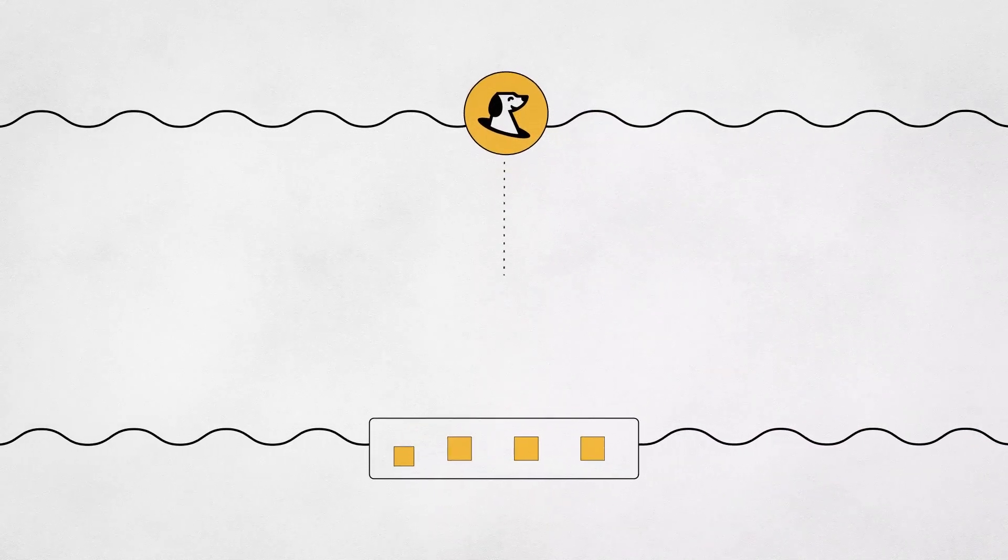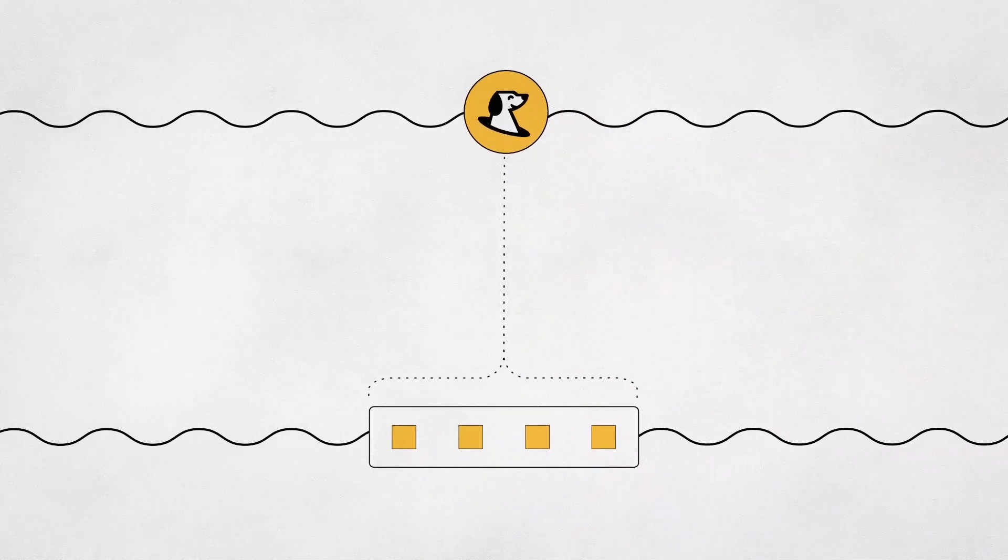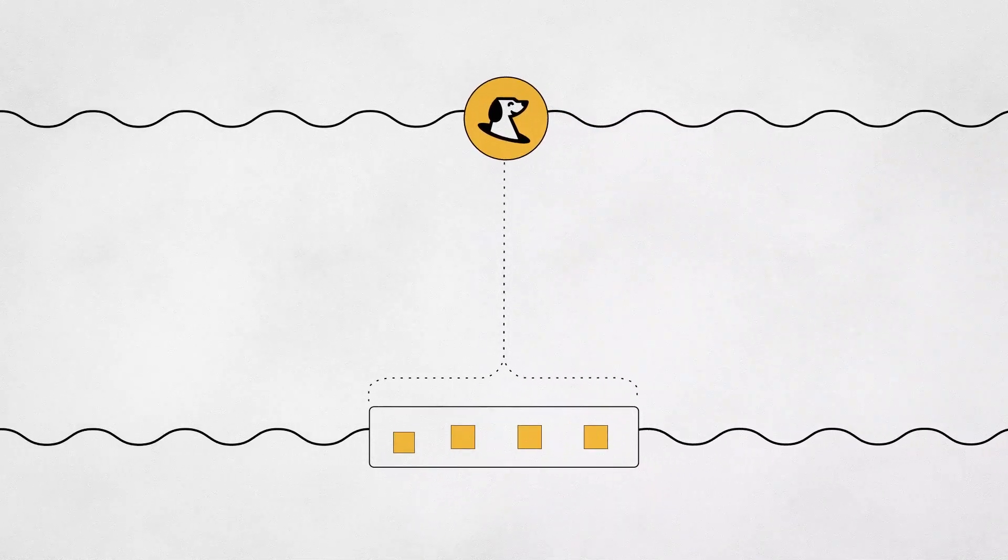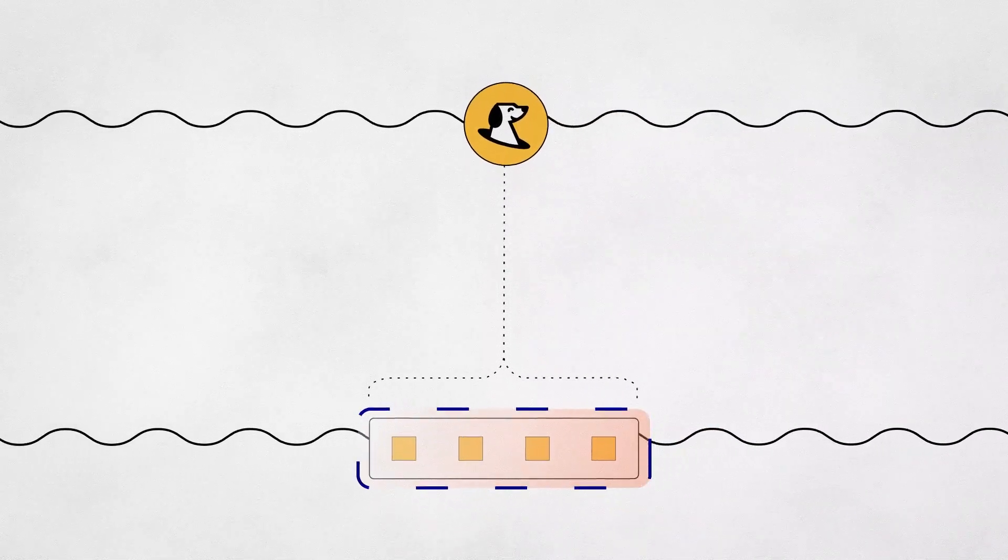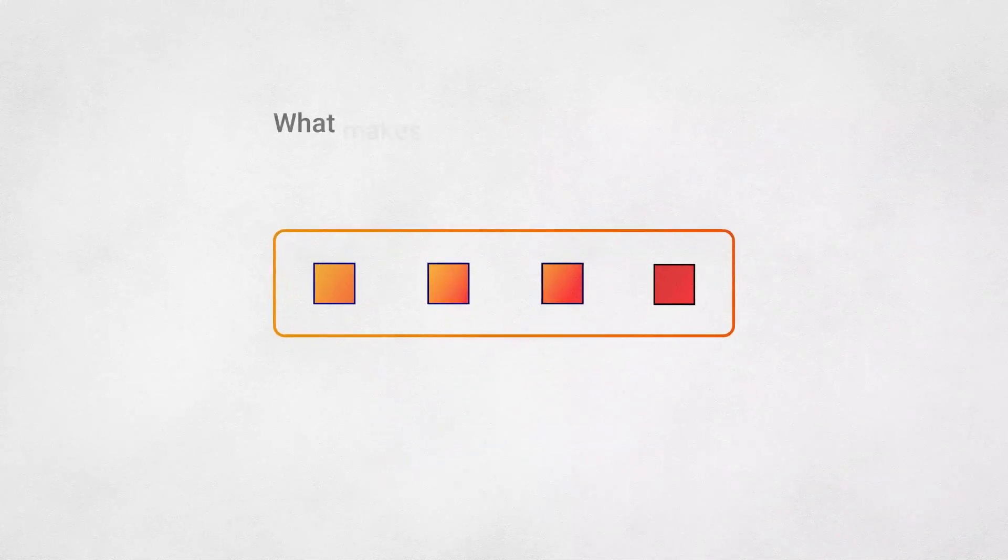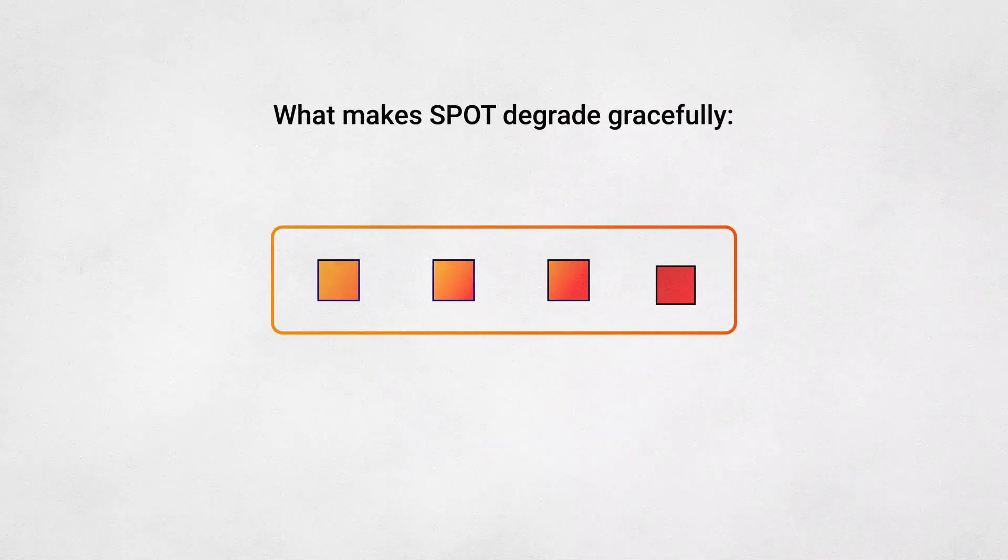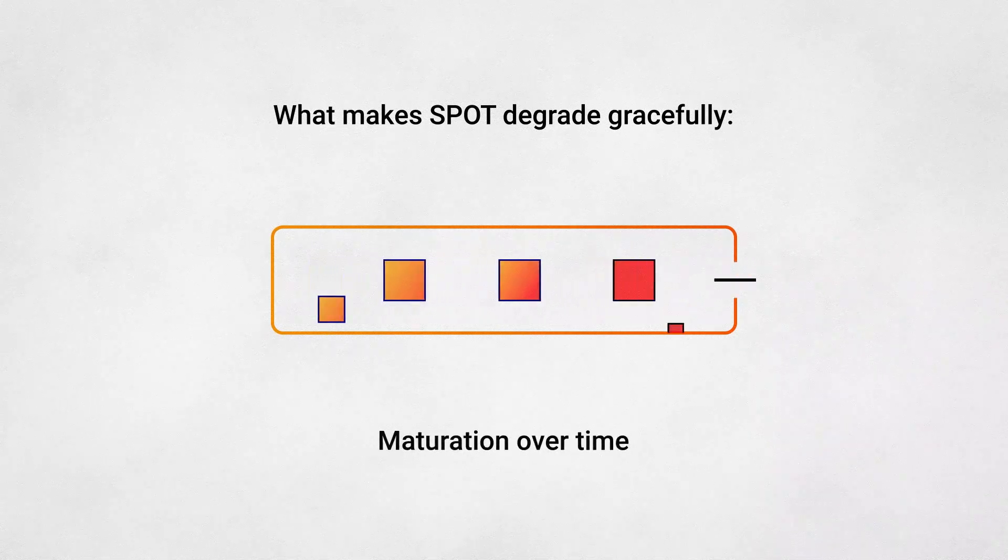The SPOT token is just one directional claim on a basket of collateral. The system's stability has nothing to do with its token, and everything to do with the process of refining the assets in SPOT's collateral set, such that they remain stable. And what makes SPOT degrade gracefully is the progressive way in which refined collateral sets mature into raw base assets over time.